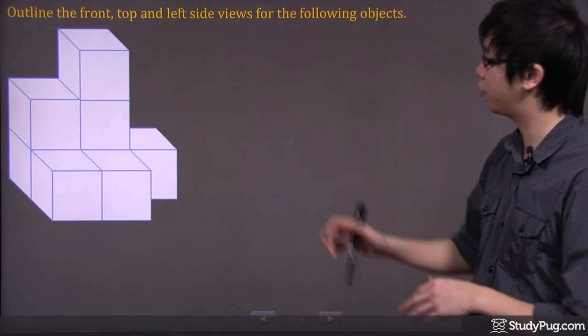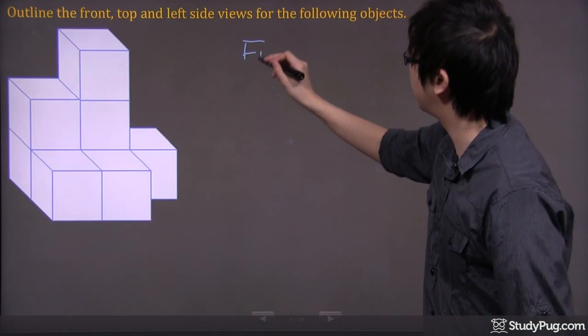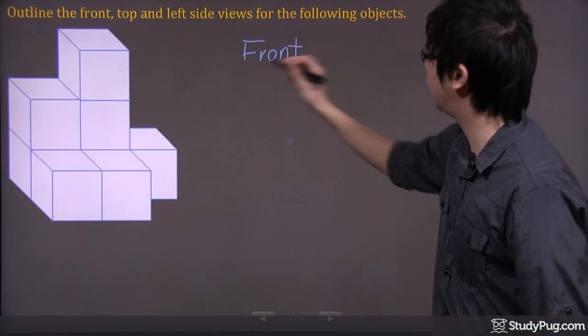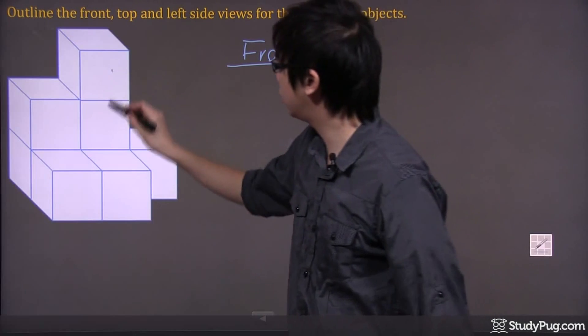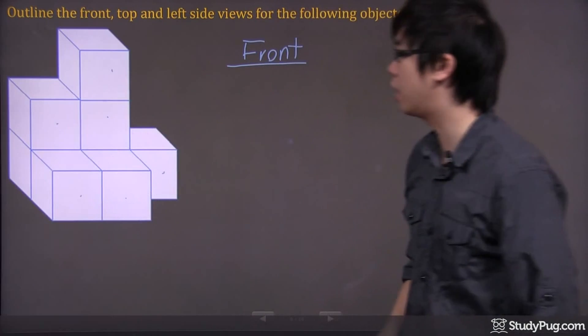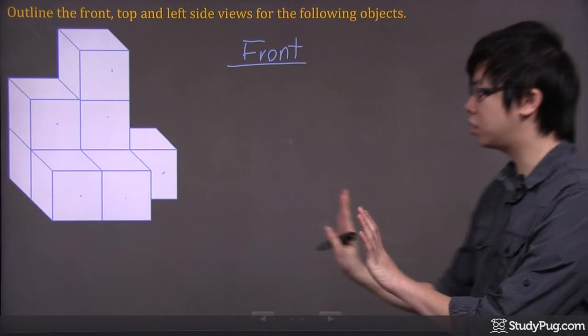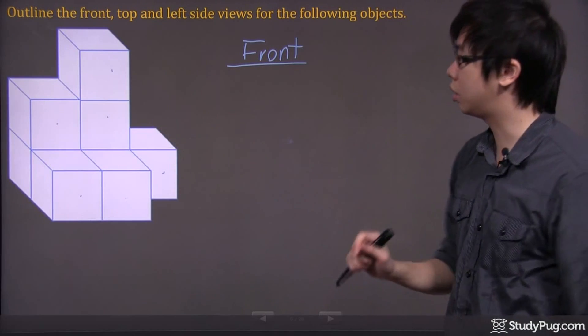So let's do the front first, since that was the first one. If you look in the front, basically what we have is you're looking from this direction. So I'm doing the blue ones. I got one, two, three, four, five, six. I got six blocks. If I'm looking from this direction, I've only seen the six blocks.